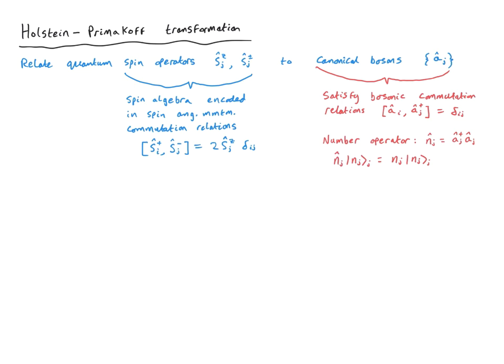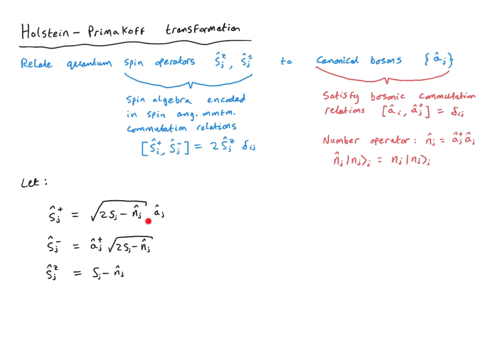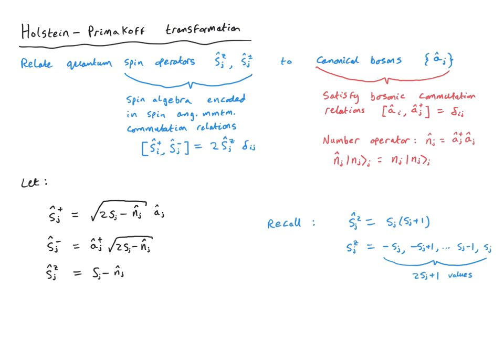The idea is to express spin operators on site j in terms of canonical boson creation and annihilation operators a_j dagger and a_j. The spin-raising operator S_j plus equals the square root of (2s minus n_j hat) multiplied by operator a_j hat. The lowering operator S_j minus equals a_j dagger times the square root of (2s minus n_j hat). Note that S_plus and S_minus are Hermitian conjugates of each other, as they should be. And S_jz equals s minus n_j hat. Together these form the Holstein-Primakoff representation.